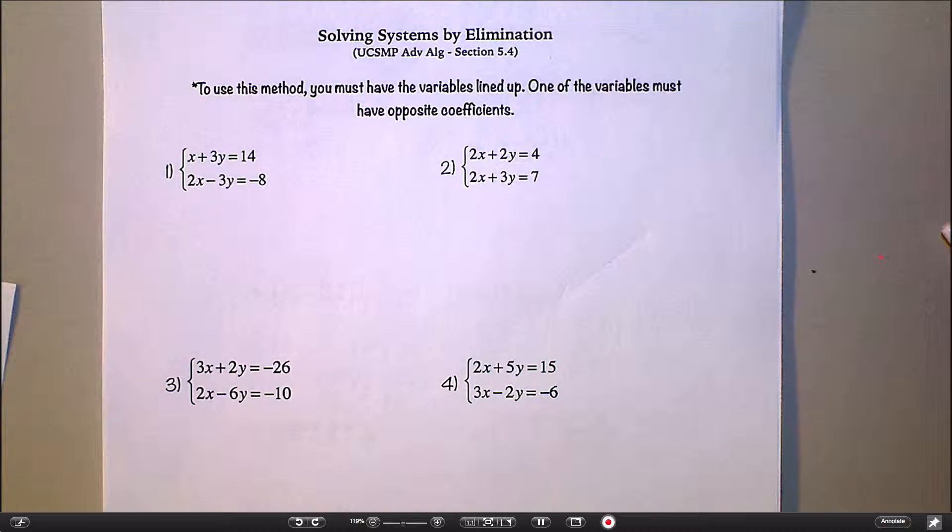Okay, so with substitution, we always had to start with one variable by itself, right? With elimination, you start a little differently. You want to start by making sure that your x's and y's are lined up. So you'll see that in these equations, they all start with like something x and something y and a number on the end. They're like lined up with each other. So this is when usually elimination is the easier one to use. And what this whole method relies on is taking the two equations stacked on top of each other and adding them together up and down and making one of the variables cancel out.